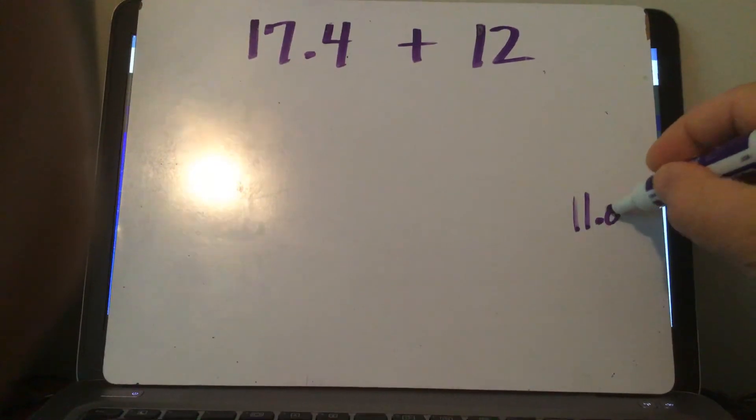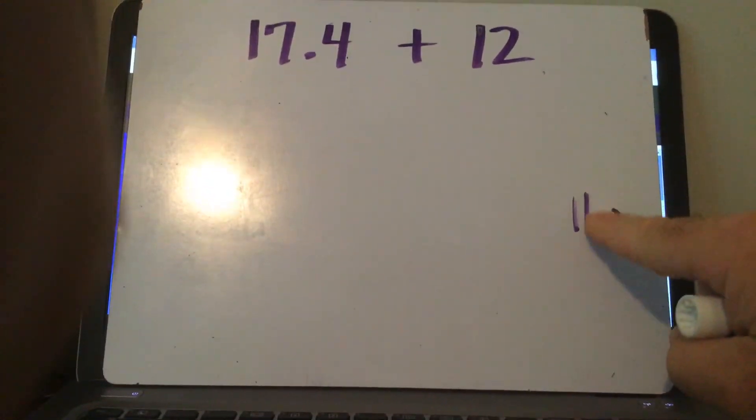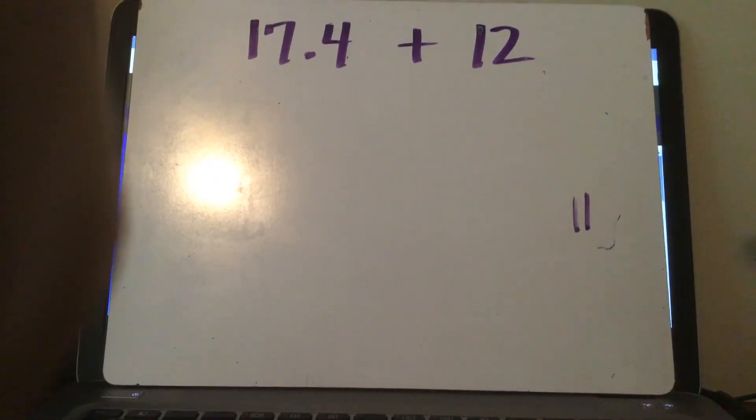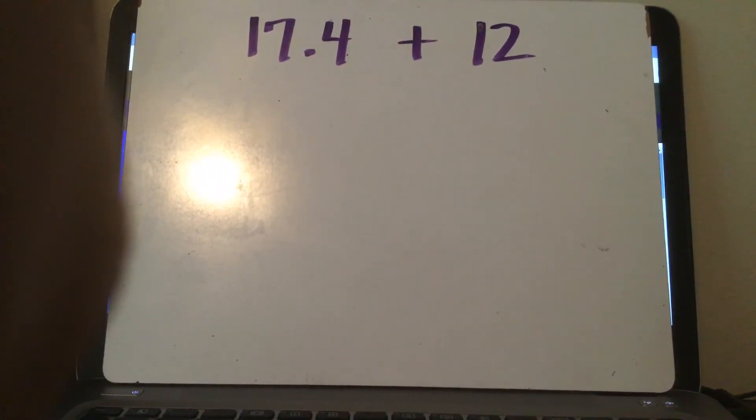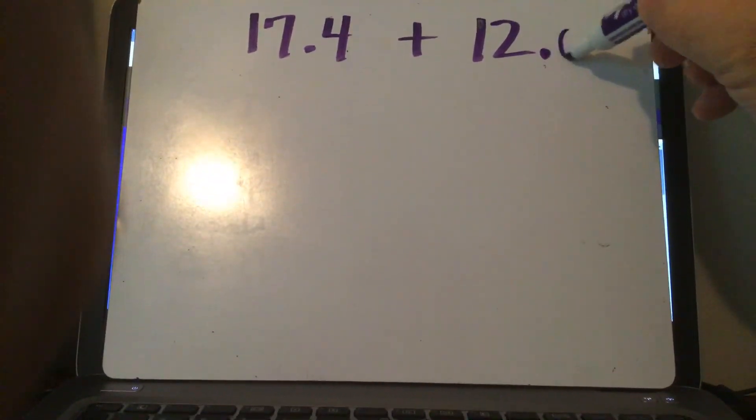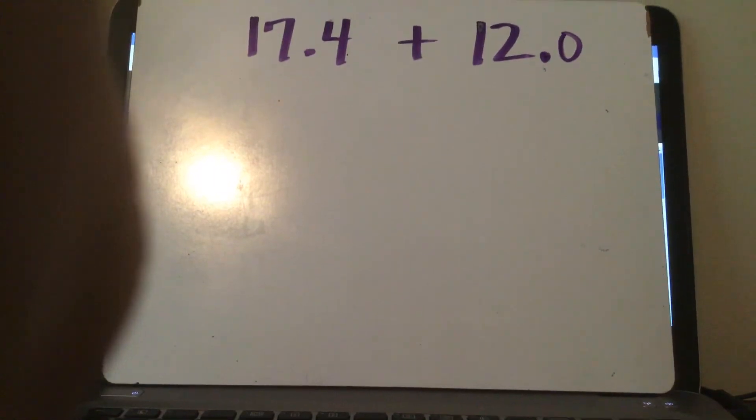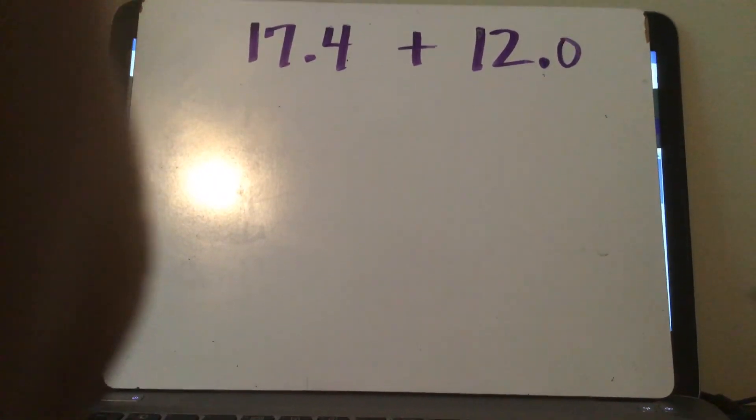Like, let's say y'all's age. Would you write down your age is 11.0? Would you do that? I don't think so. You just write, hey, I'm 11. You know, I don't need to put a and 0 tenths at the end. But that decimal is always at the end.